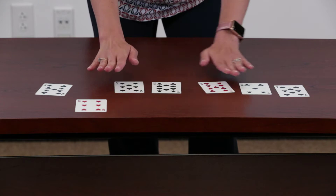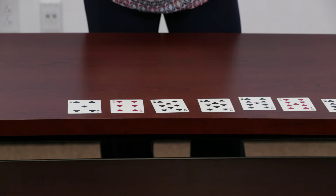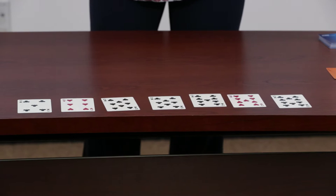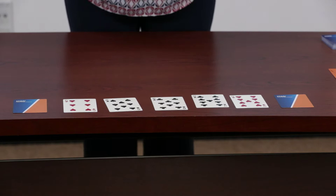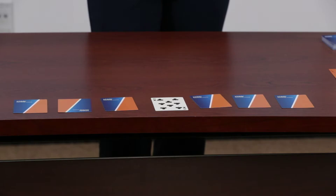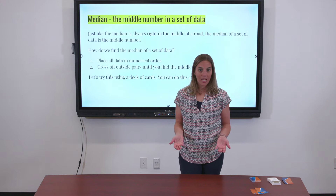My smallest number is five, then my six. Then I have two eights, two nines, and a 10. Did you include both eights and both nines? Now on your paper, cross off those outside two numbers, and keep coming towards the middle. Can you already see what my median is going to be? My middle number is that eight.